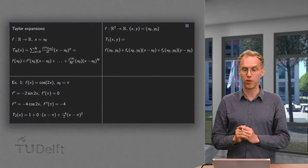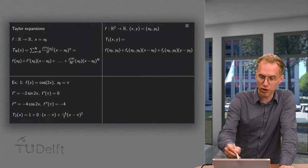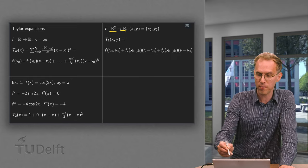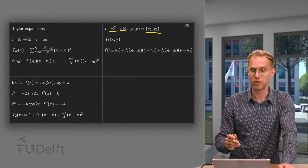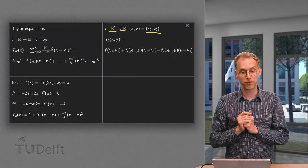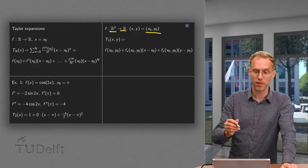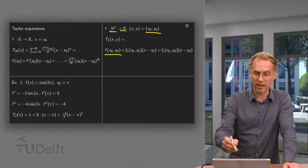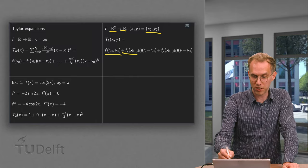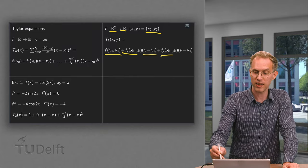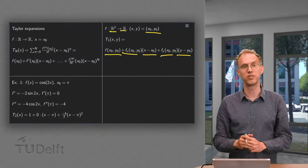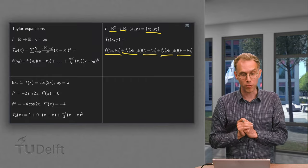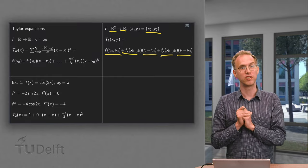Now moving on to more variables. Some function from R² to R and some point (x₀, y₀). Now the first Taylor polynomial, T₁, we again get f at (x₀, y₀). And then fx at the point times (x - x₀) plus fy at the point times (y - y₀). So you already get one more term. That's the first order Taylor polynomial.